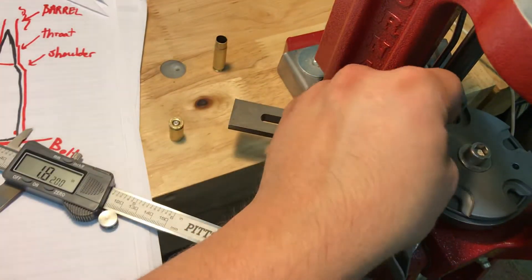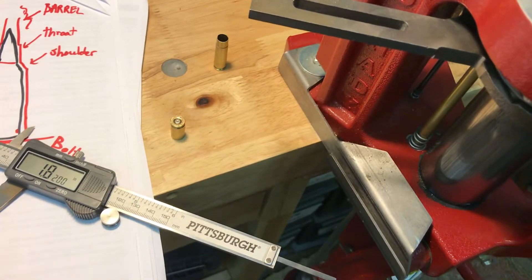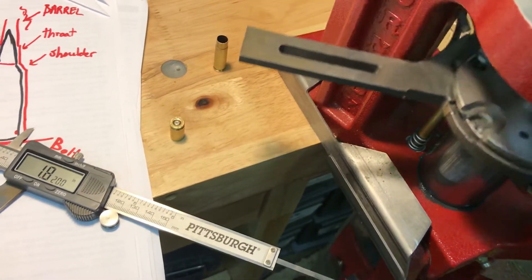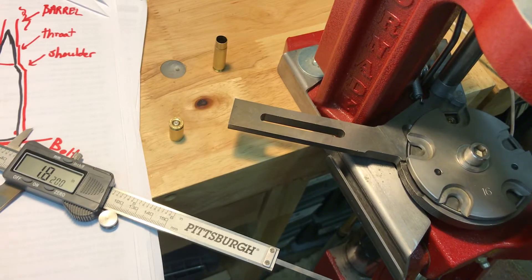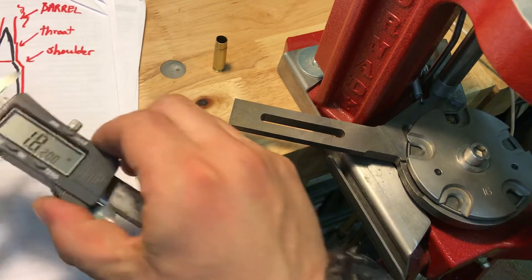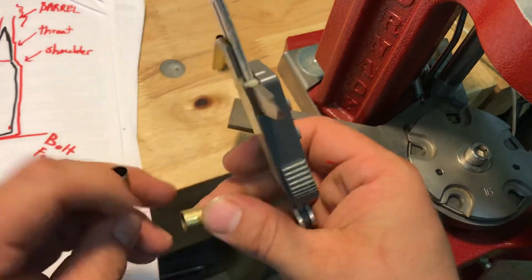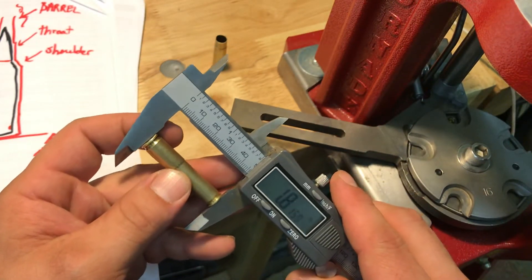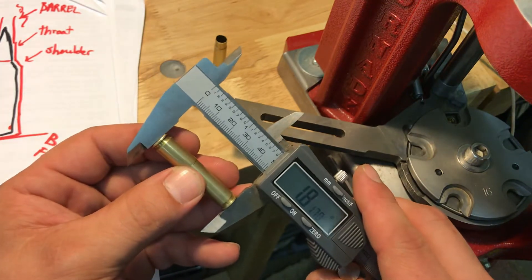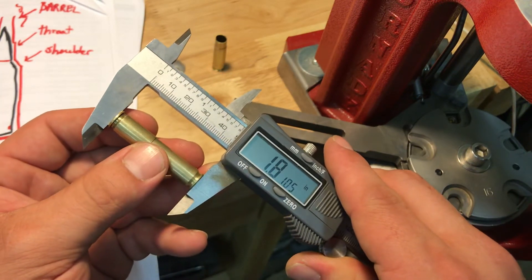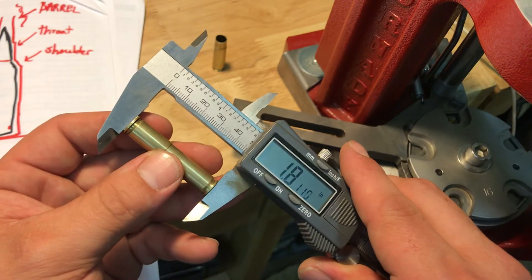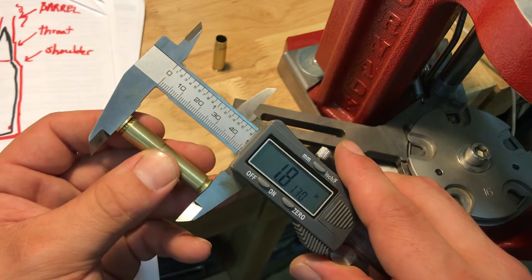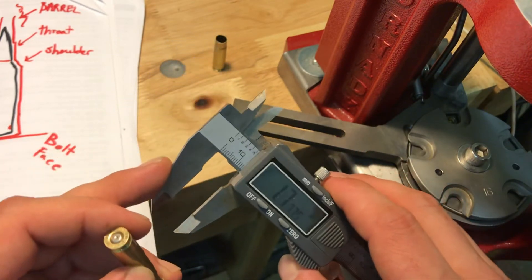Then we'll run this through our sizer. Decapper and then the sizer. We're going to take this again and see if it changed any from that 815.5. It's about 815 or 811.5. So it did set it back about 40 thousandths, which is fine for me.